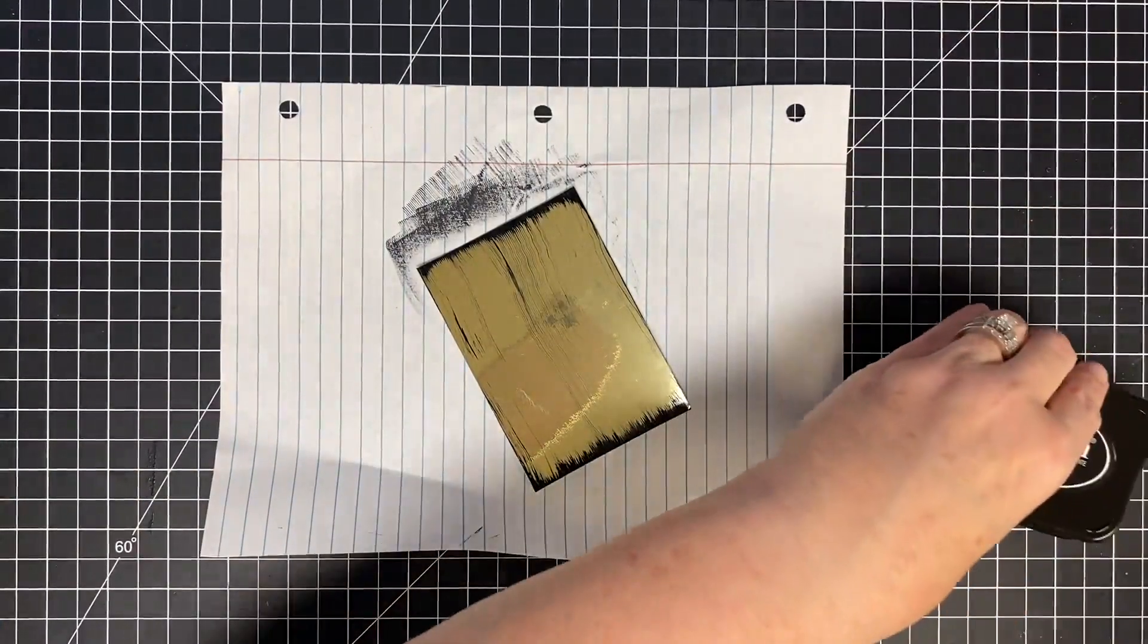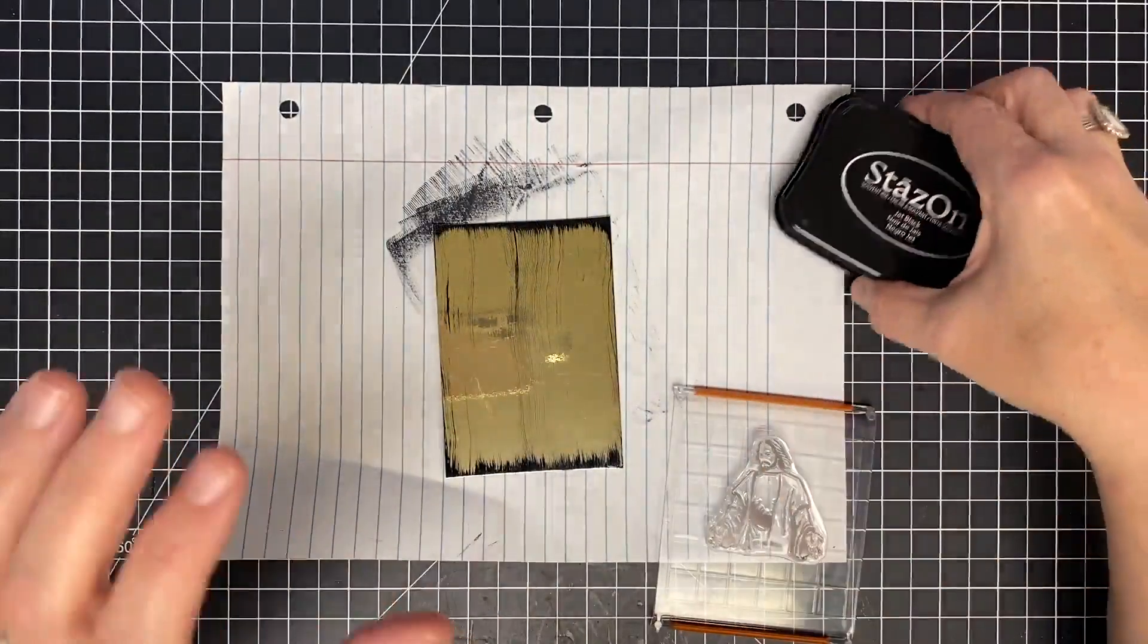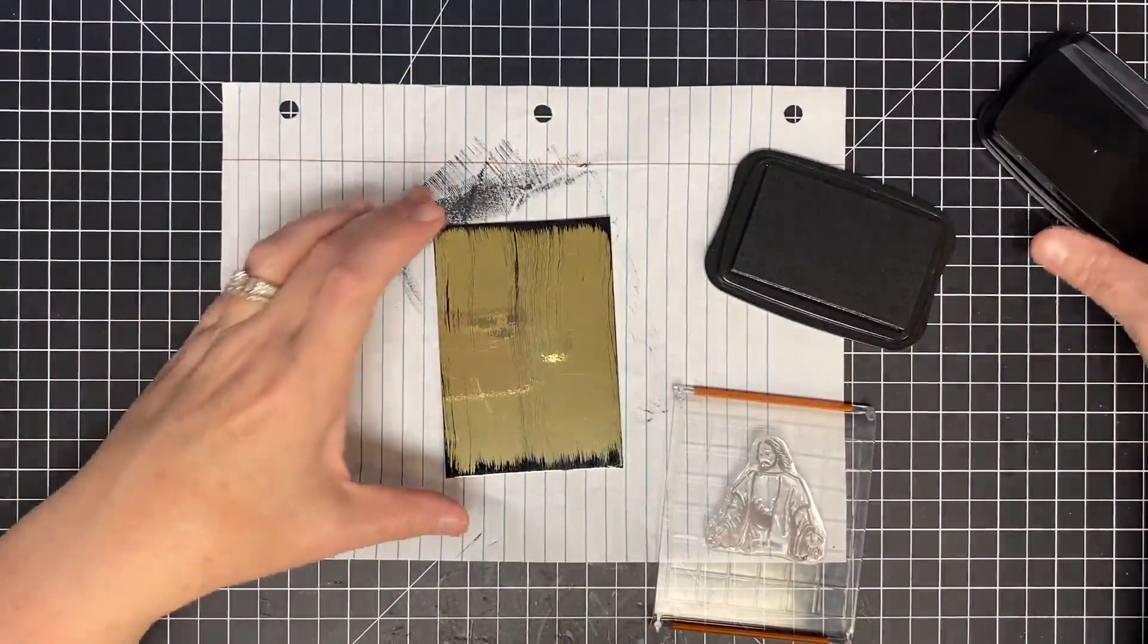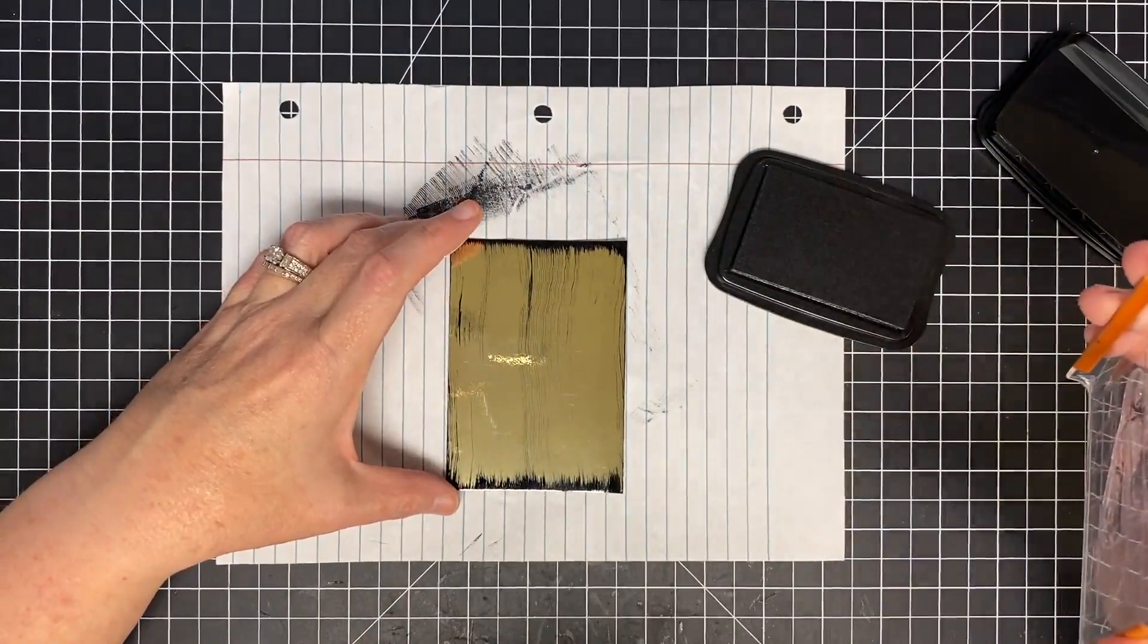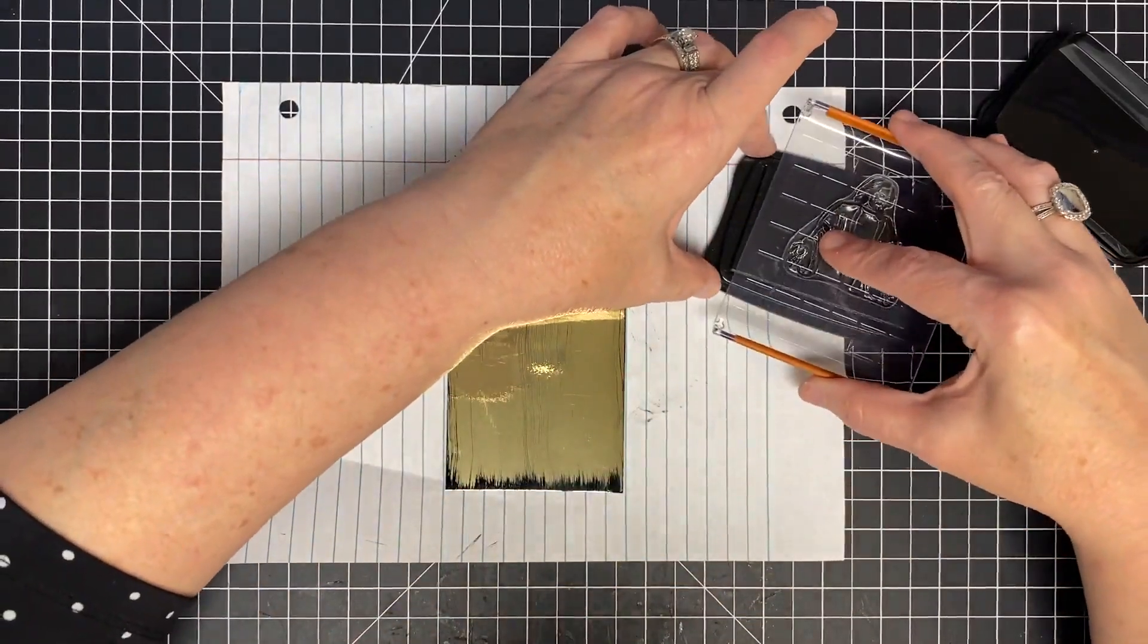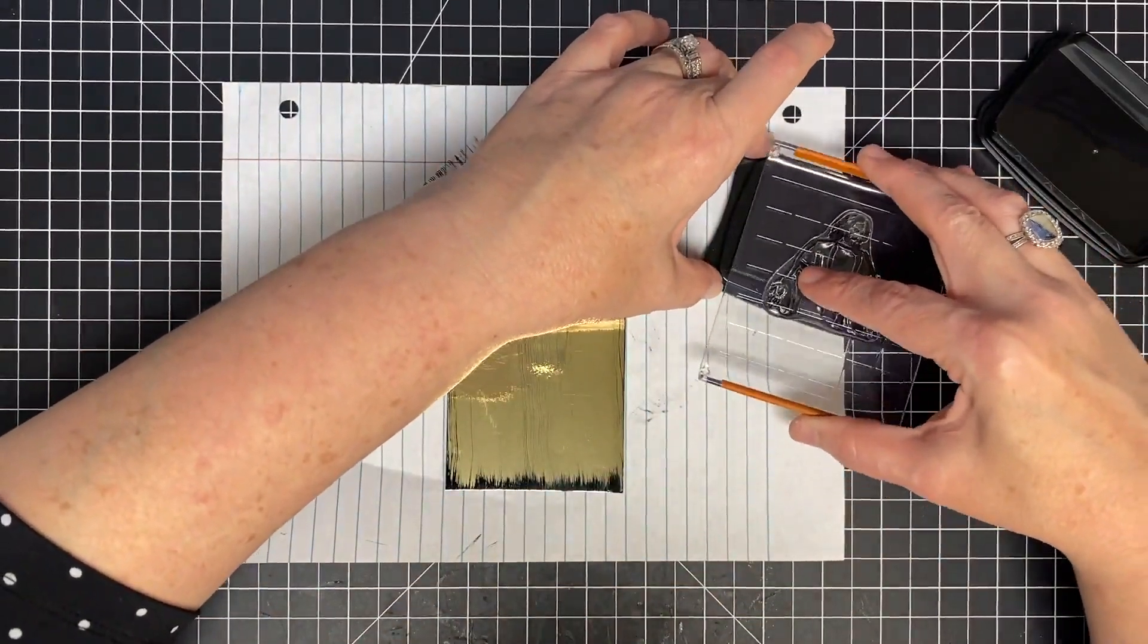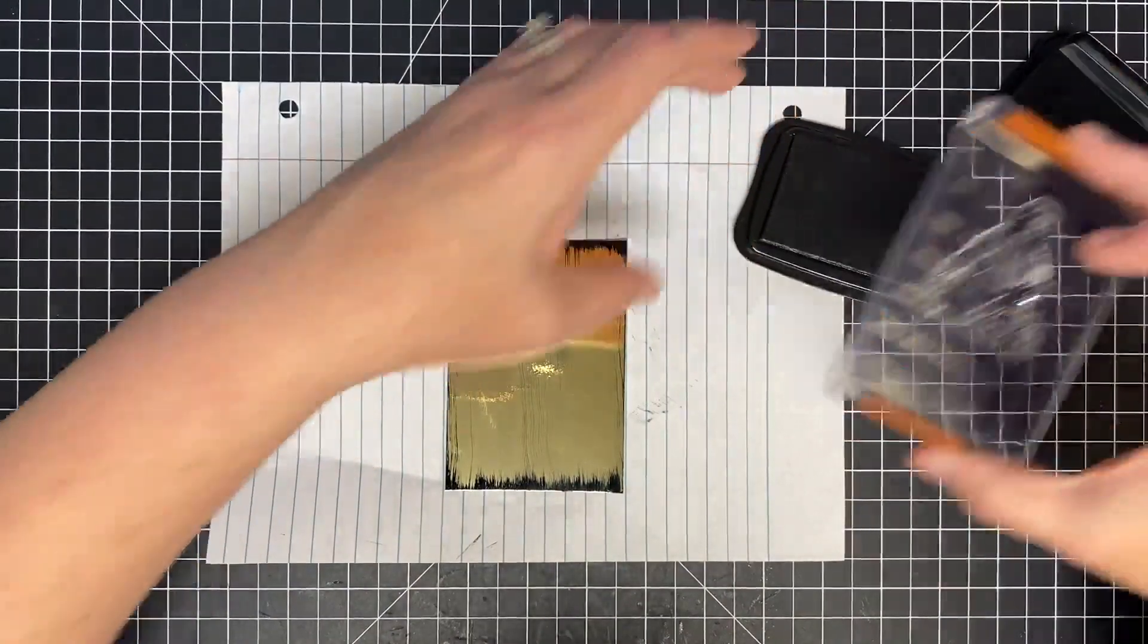And now I'm going to do some other stamping with my Stazon. So I have not used my Stazon in so long, guys. It's been a really long time, but I think this would be a perfect technique for our newest stamp set called He's Alive. So I'm going to use the image of Jesus here, and I'm going to do it sort of at the top of the page using that same Stazon, or like I said, you could use your archival.